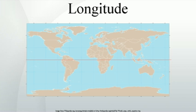Unlike latitude, which has the equator as a natural starting position, there is no natural starting position for longitude. Therefore, a reference meridian had to be chosen. It was a popular practice to use a nation's capital as the starting point, but other locations were also used. While British cartographers had long used the Greenwich Meridian in London, other references were used elsewhere, including El Hierro, Rome, Copenhagen, Jerusalem, St. Petersburg, Pisa, Paris, Philadelphia, Pennsylvania, and Washington, D.C. In 1884, the International Meridian Conference adopted the Greenwich Meridian as the universal prime meridian, or zero point of longitude.